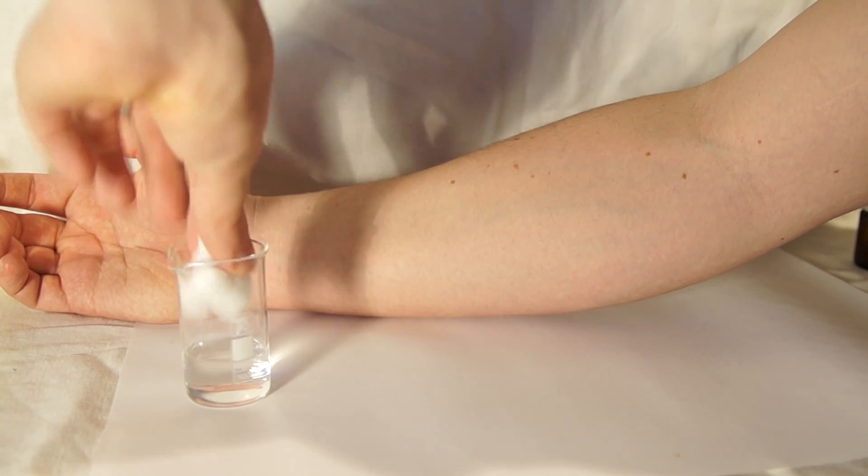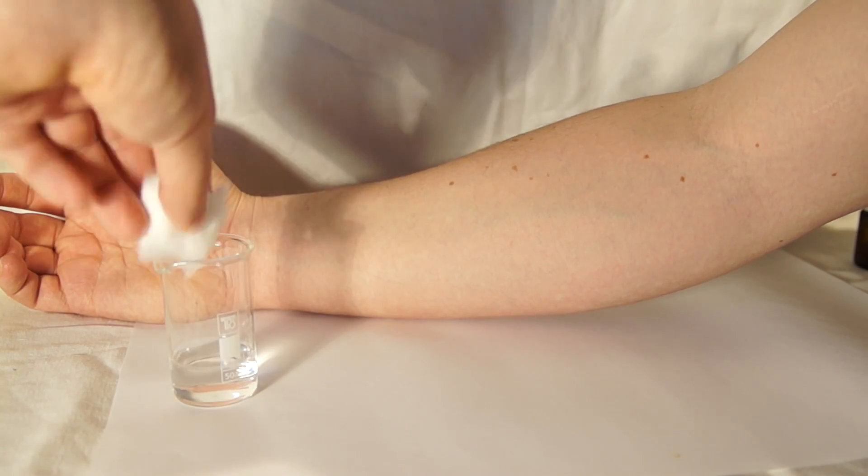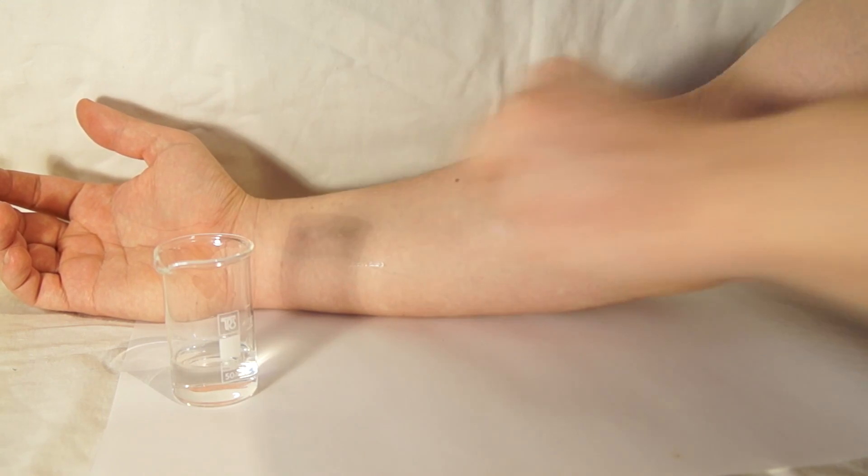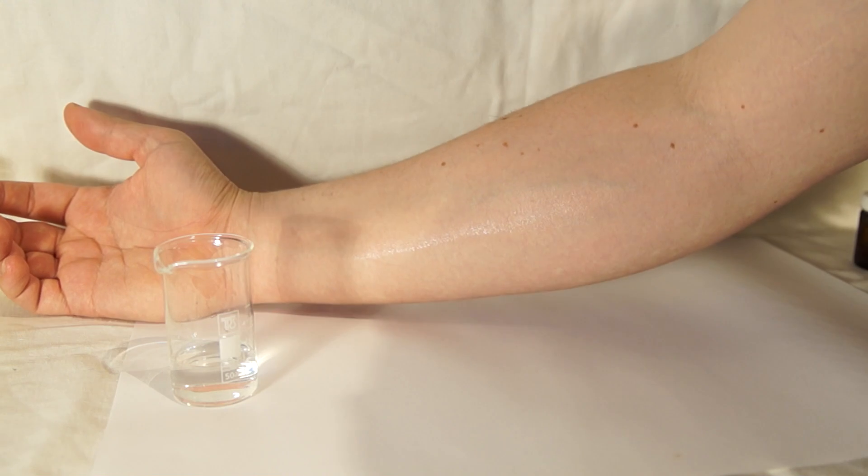This experiment is quite simple. Just take the hand of a test subject, you can use your own, and moisten it with the solution of potassium thiocyanate using a cotton pad.